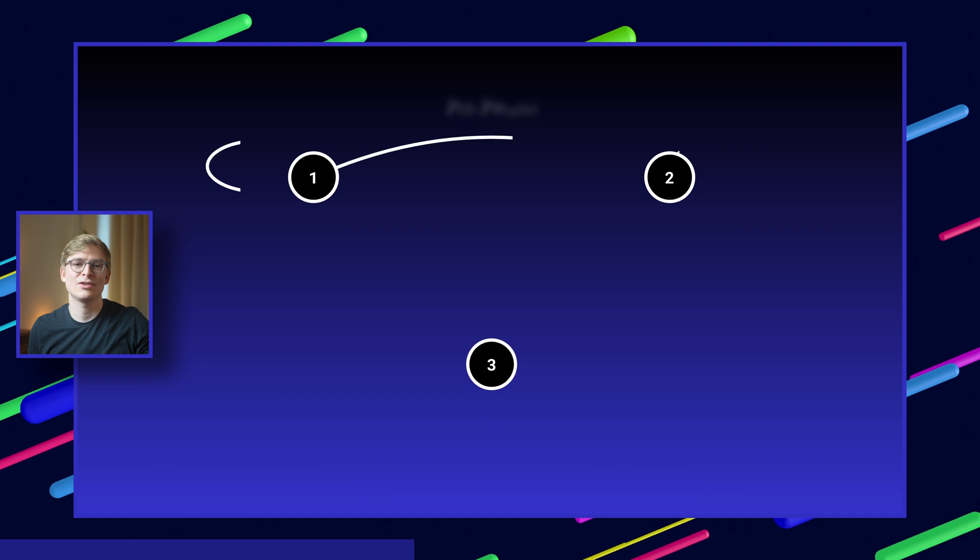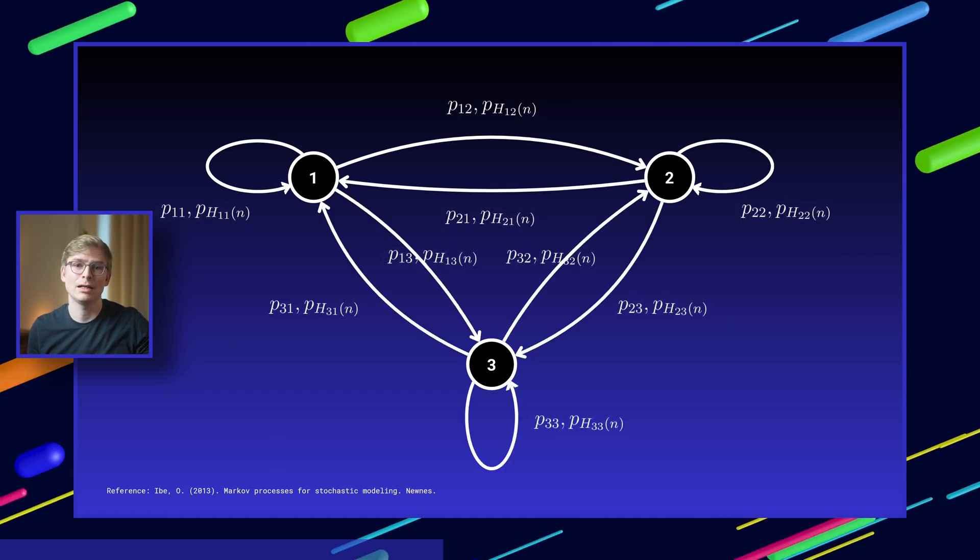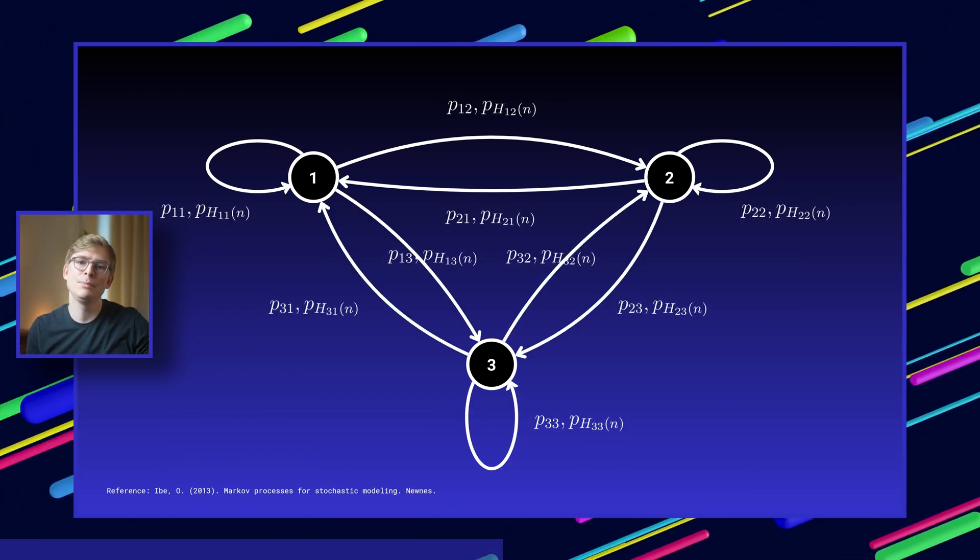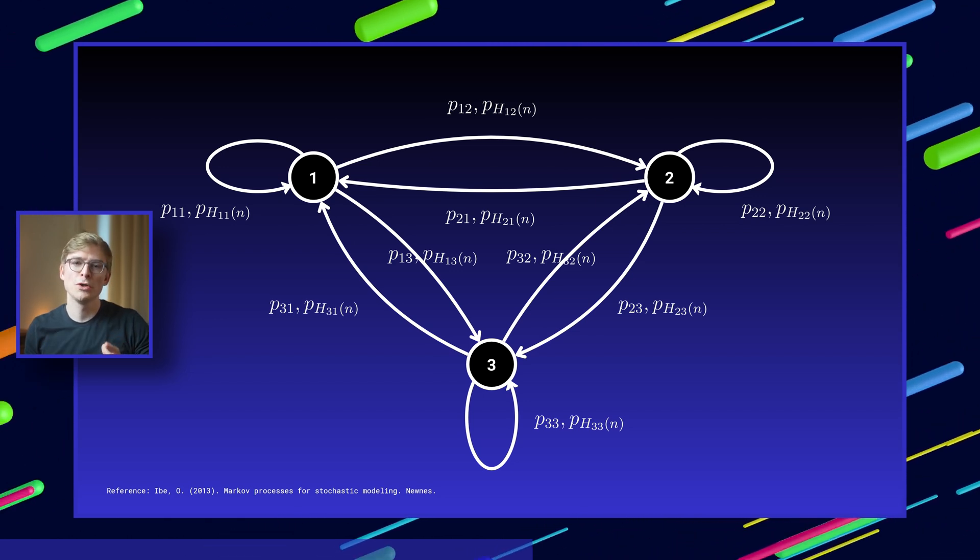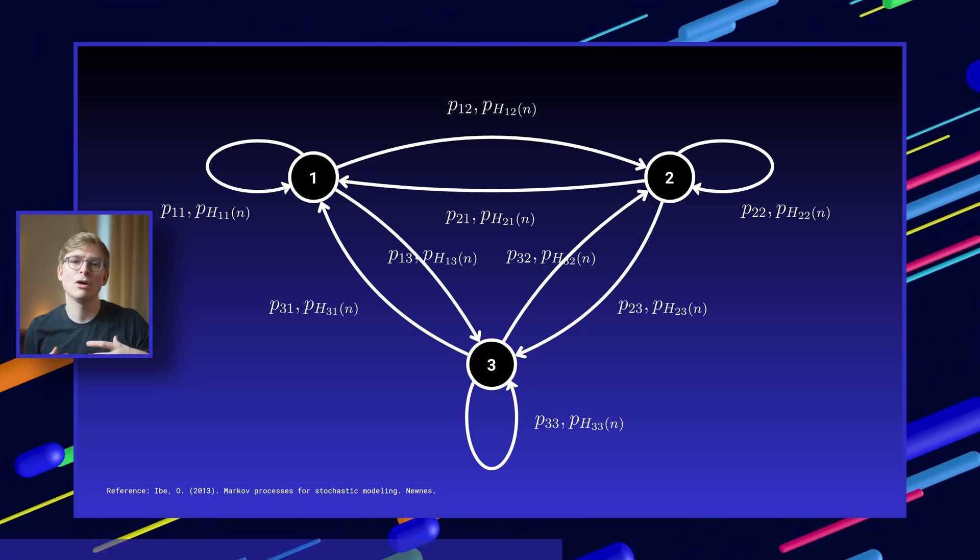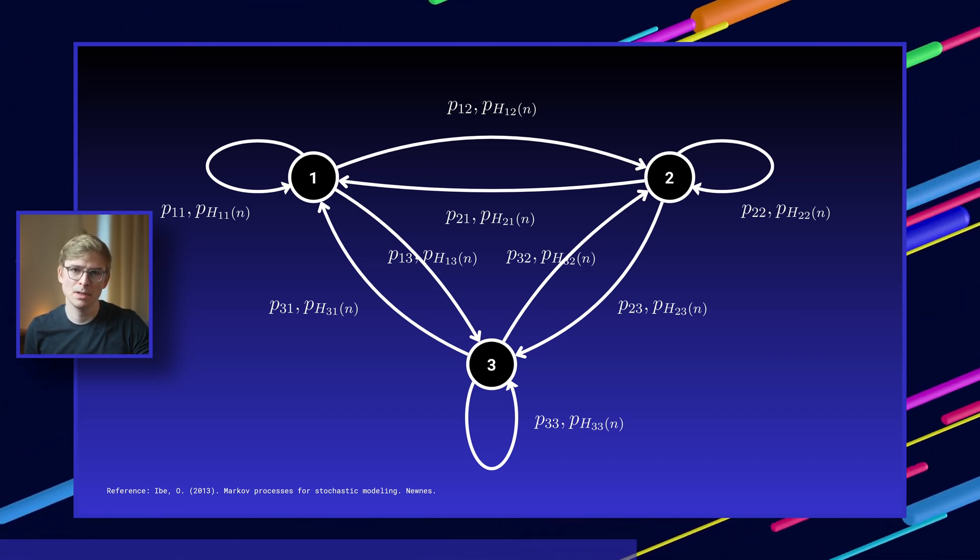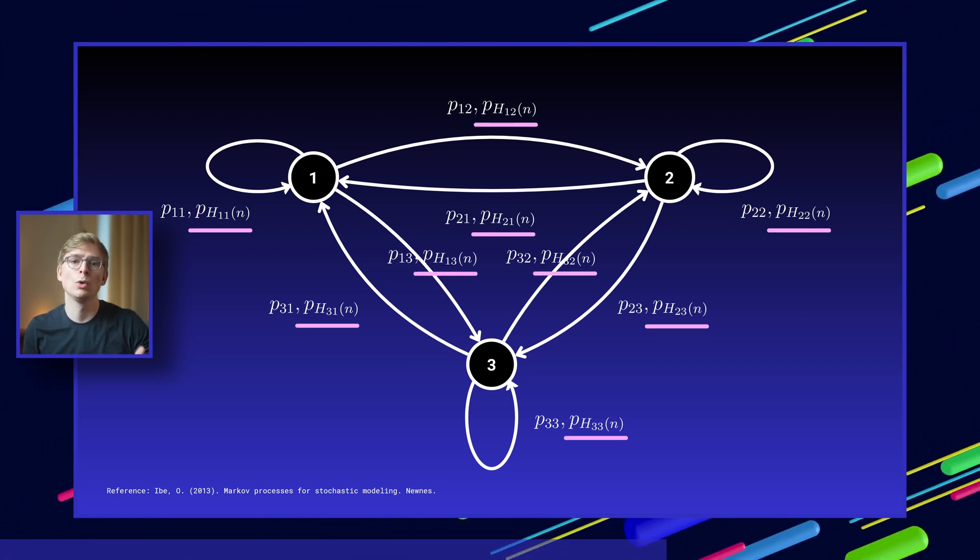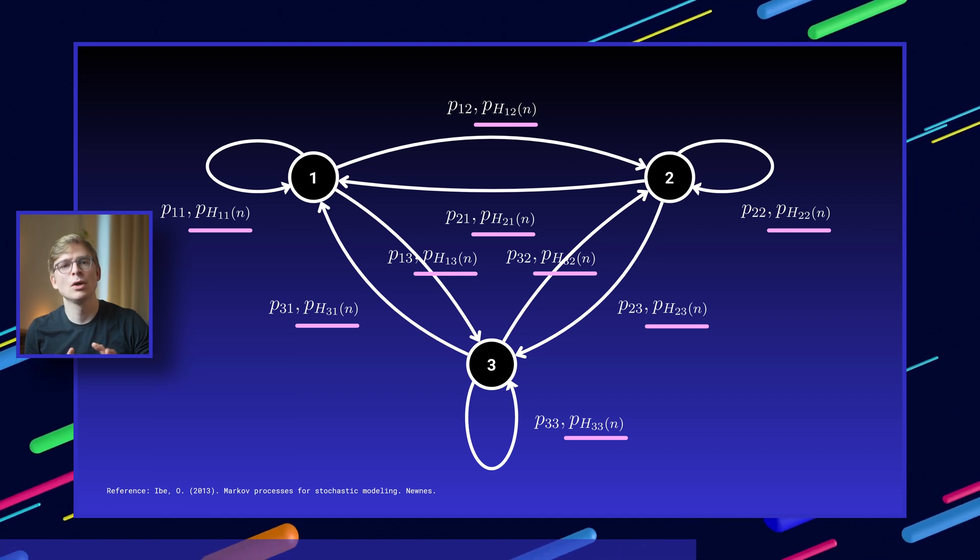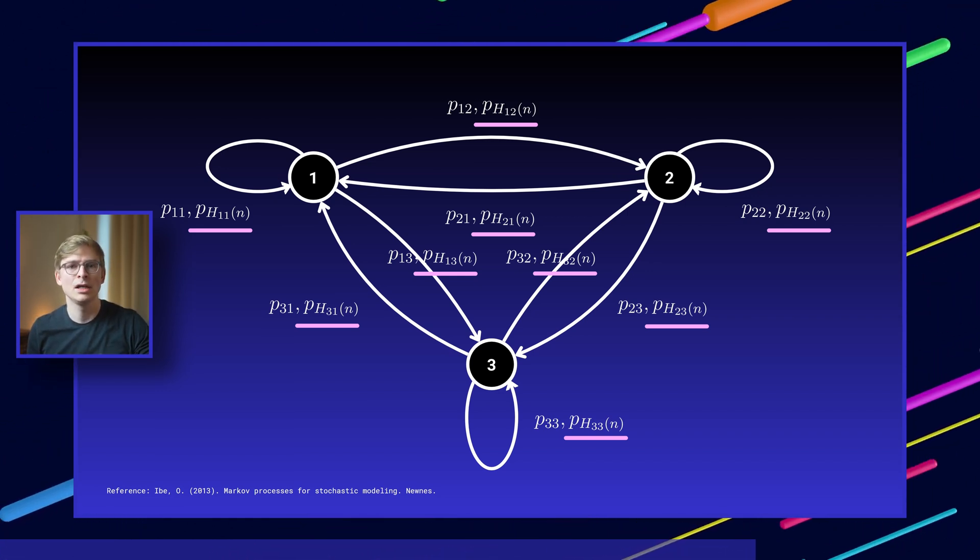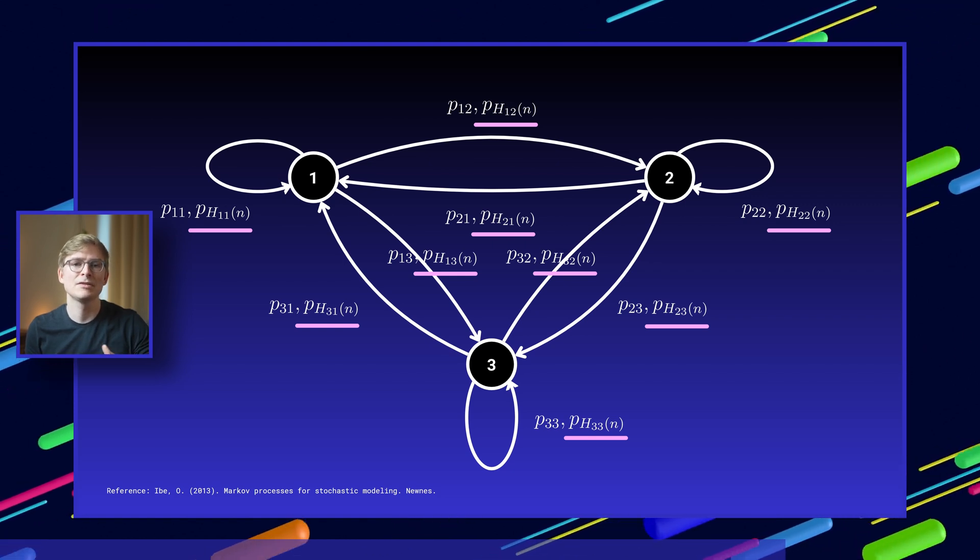This can be expressed using a state transition diagram of a discrete time semi-Markov process where individuals can move freely between three health states. What you can see is that the probability of transitioning expressed as P is not only affected by existing state membership, but also by a so-called holding factor H. This holding factor keeps track of how long patients spend in a given health state and adjusts the transition probabilities accordingly.